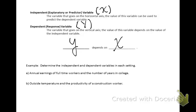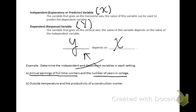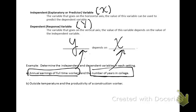For example, determine the independent and dependent variables in this setting: annual earnings of full-time workers and number of years in college. I ask myself, does number of years in college depend on how much money you earn, or is it the other way around — does annual earning depend on the amount of years spent in college? This one makes more sense. So annual earnings of full-time workers is our dependent variable and number of years in college is our independent variable.